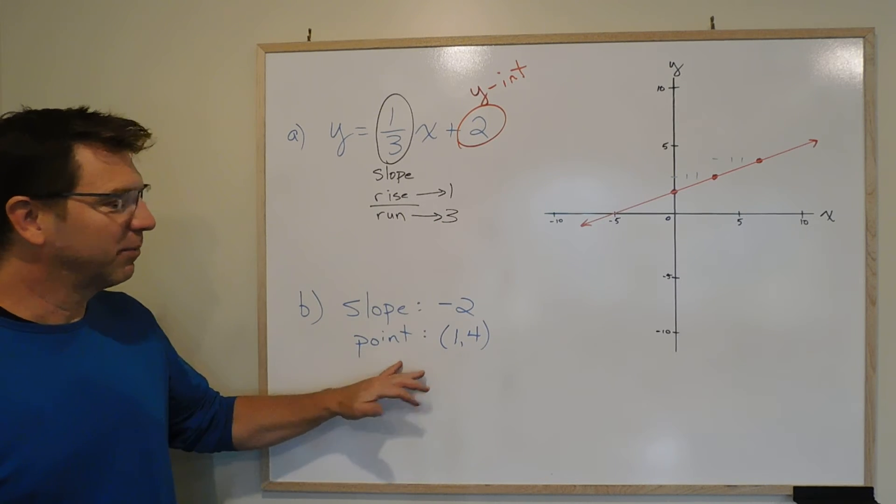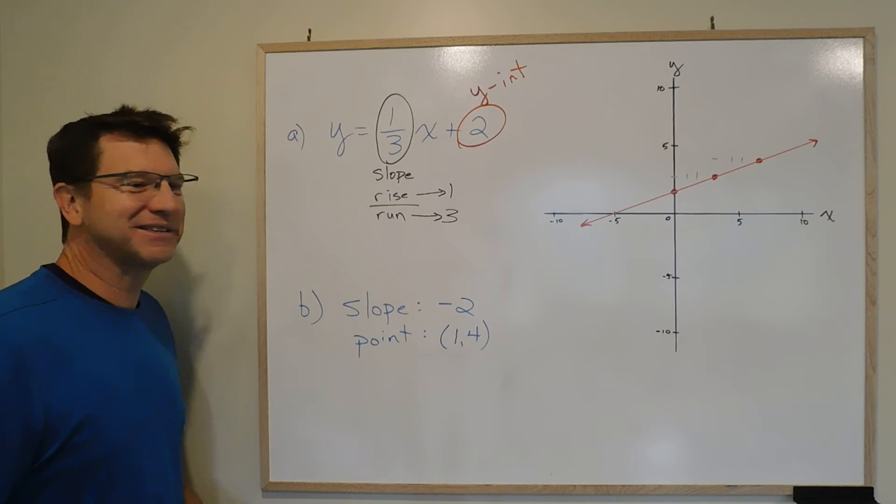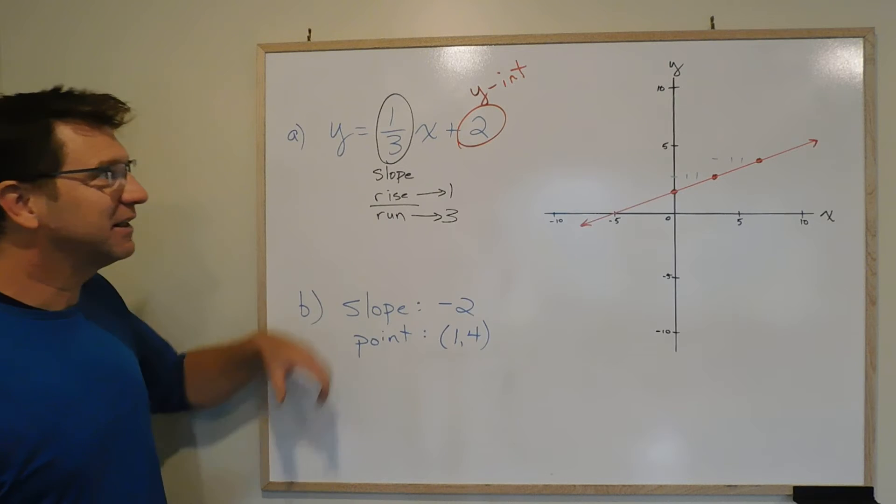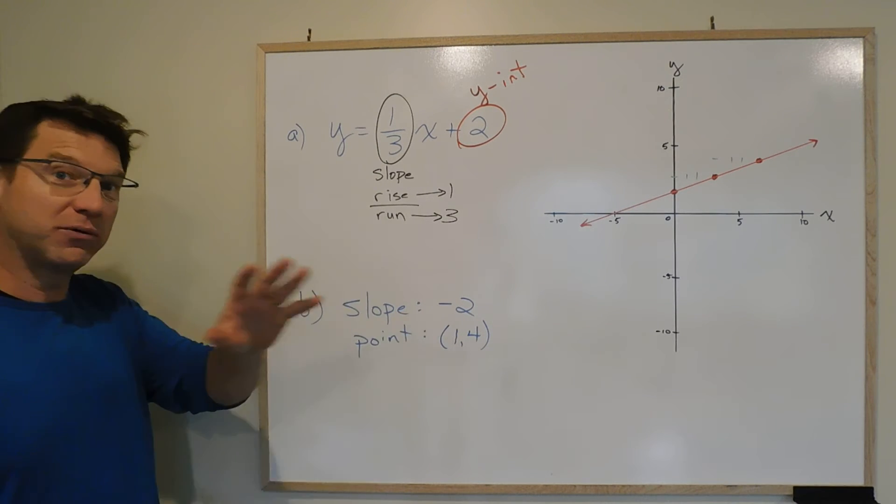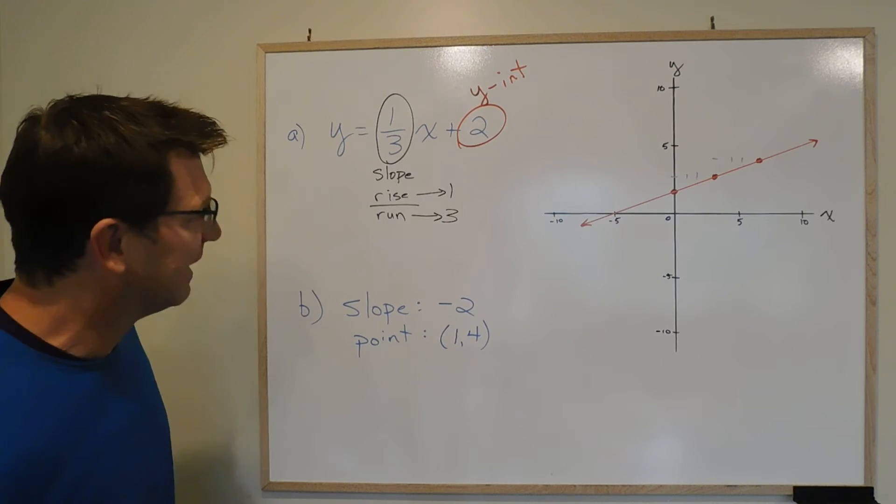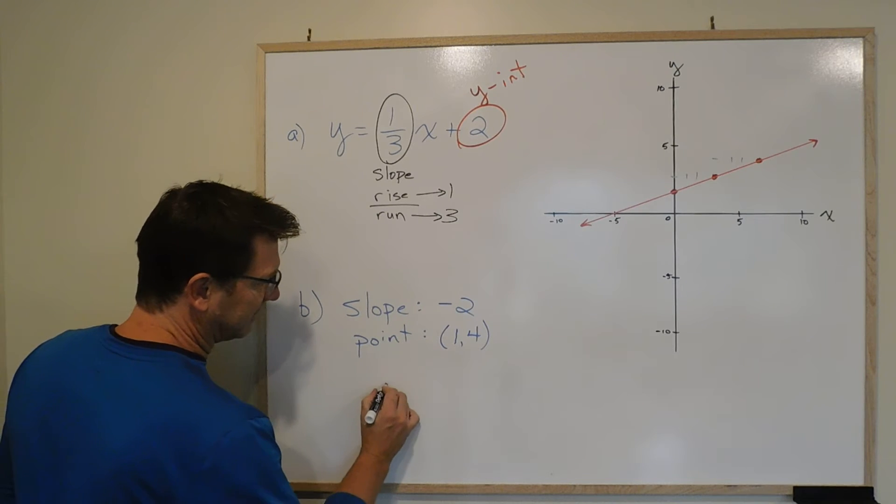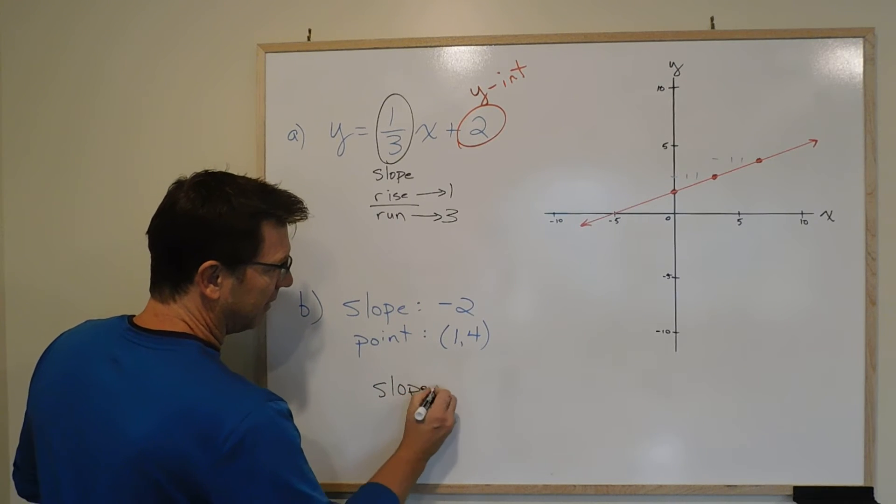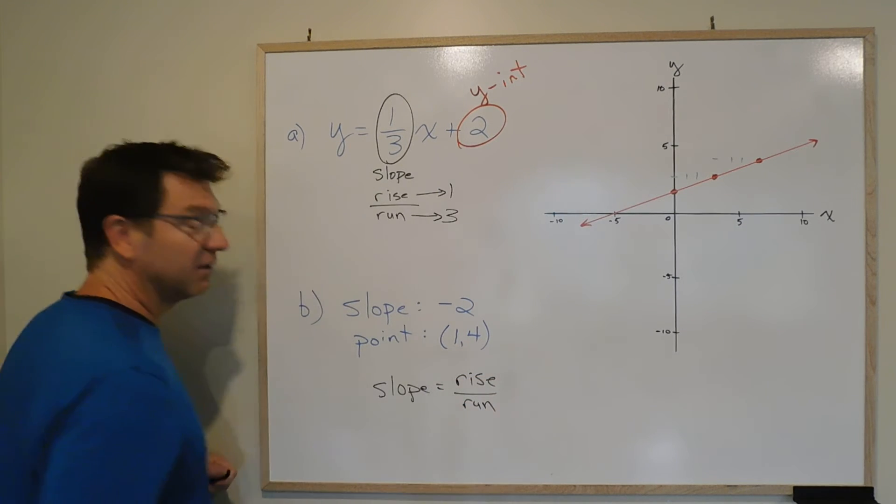Let's leave it up. We'll go to part B. We'll try our blue. Hopefully our blue works this time. Part B is different. It does not give you the equation, but it does give you the slope. So we still know the slope. Now, in this case, a slope of negative 2. Well, I said slope is equal to rise over run.